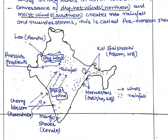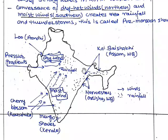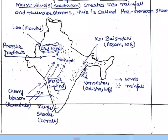Cherry blossom showers occur in Kerala and Karnataka. In northwestern India, West Bengal, and Odisha, Kal Baisakhi and Aandhi (dust storms) are associated phenomena. Dry winds called Loo and dust storms create strong pressure gradient sequences in northwestern India.